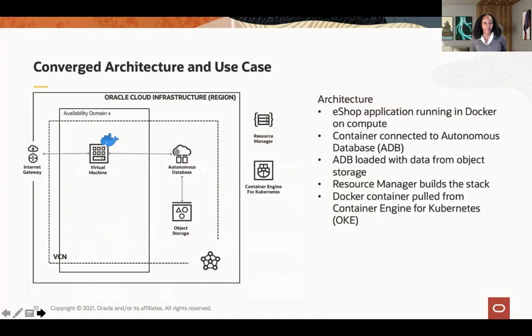Let me talk about the architecture. This particular workshop features a compute instance that is connected to the Autonomous Database. The application we're using, we call it eShop, and it does mostly transaction processing. There are three flavors of the Autonomous Database: Autonomous Data Warehouse or ADW, Autonomous Transaction Processing or ATP — which we're using today — and the Autonomous JSON Database, or AJD, that was recently released. The workshop is going to show you how simple it is to set the database up. We preloaded data into the object store, and you're going to pull that data into your Autonomous database using Datapump to load the data in a matter of seconds.